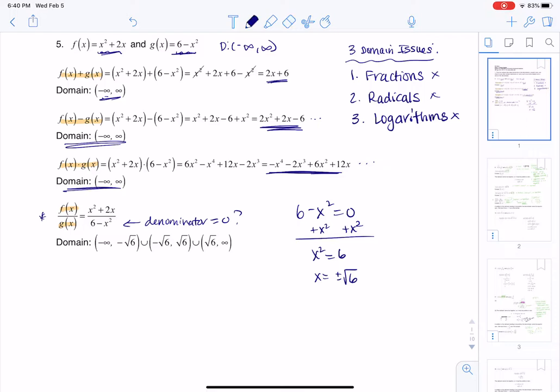And you can imagine, if I were to plug in the square root of 6 here, if I had 6 minus the square root of 6 squared, that would give me 6 minus 6, which would be 0. And the same would be true if I had a negative root 6, because even if I squared the negative root 6, I would still wind up with 6. So those are two problem areas